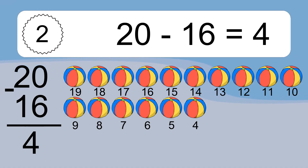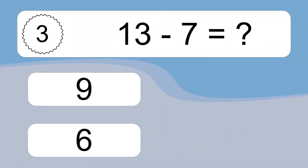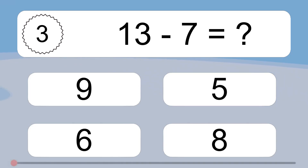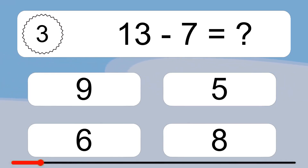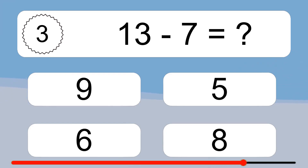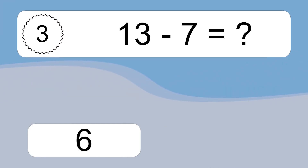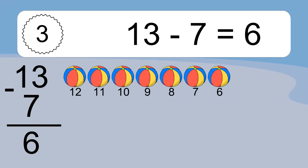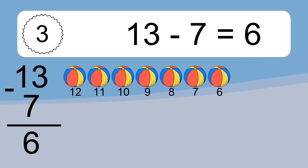7, 6, 5, 4. Thirteen minus seven equals what? Thirteen minus seven equals six. Let's count it: 12, 11, 10, 9, 8, 7, 6.